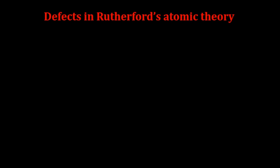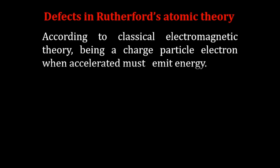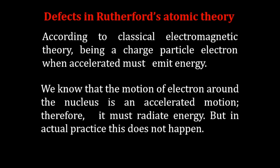Defects in Rutherford's atomic model: According to classical electromagnetic theory, being a charged particle, an electron when accelerated must emit energy. We know that the motion of an electron around the nucleus is an accelerated motion — therefore it must radiate energy. But in actual practice, this does not happen.